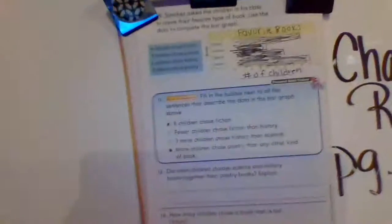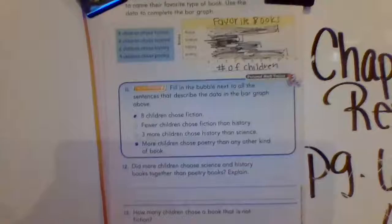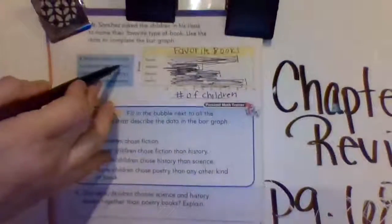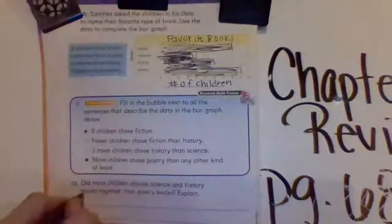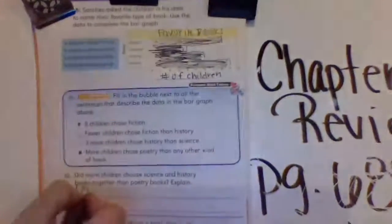Okay, did more children choose science and history books together than poetry books? Okay, science and history together would be 4 plus 6, which is 10, and poetry was 9.